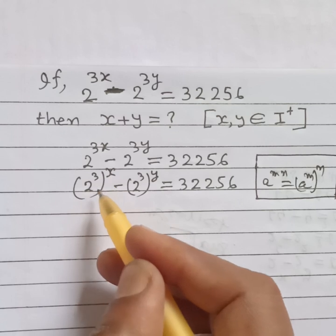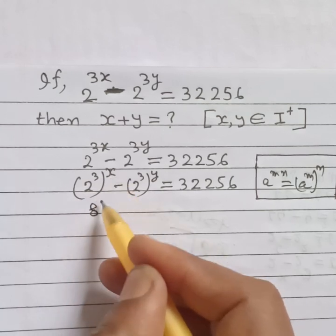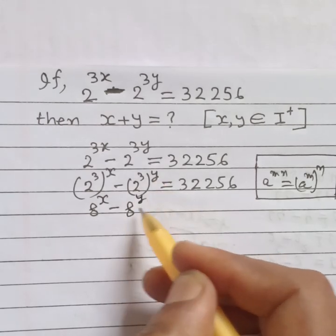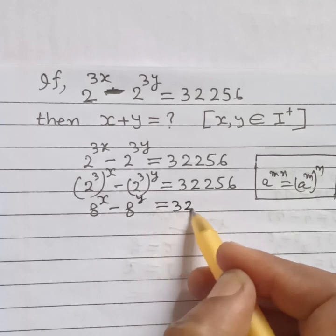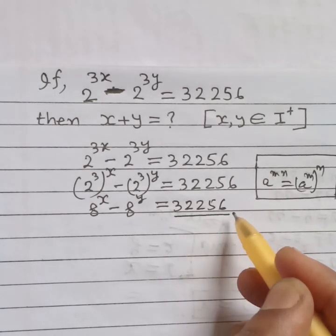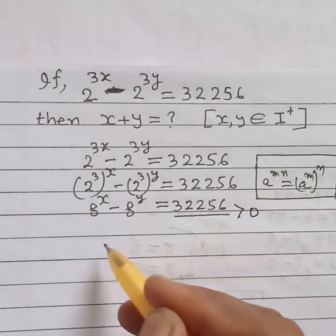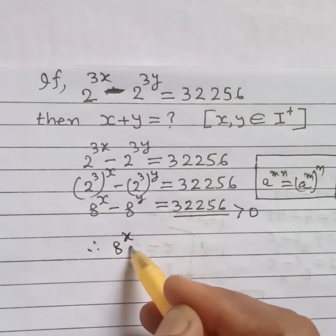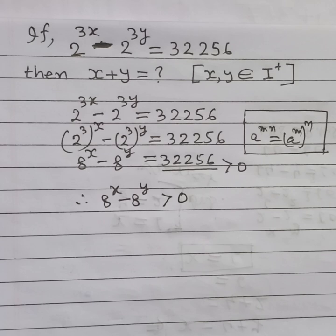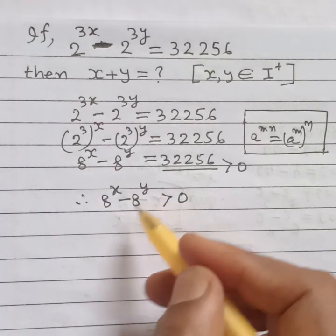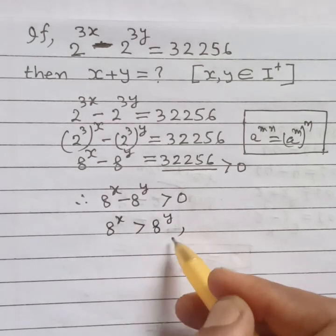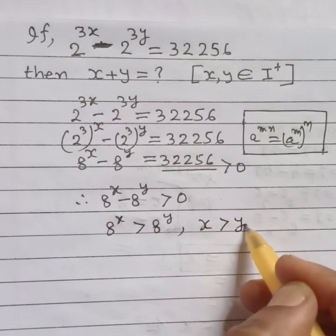Applying this, the next step gives us 8 to the power x minus 8 to the power y equals 32256, since 2 cubed is 8. This number is greater than 0, therefore 8 to the power x minus 8 to the power y is greater than 0, which means 8 to the power x is greater than 8 to the power y, so x is greater than y.